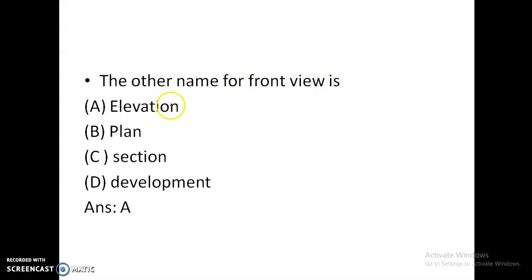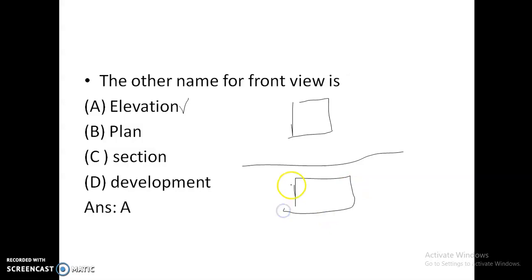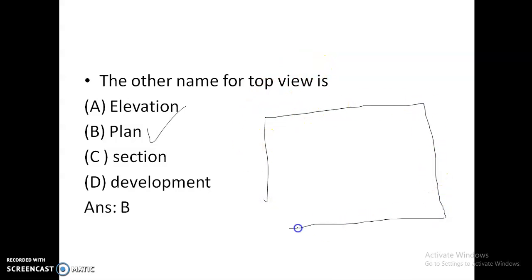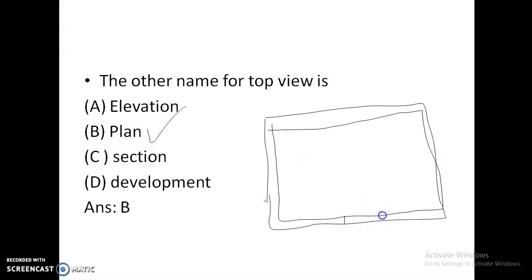The other name for front view is elevation, and the top view is called plan. For example, when viewing the front of a house it is called elevation. When building a new house, we prepare a plan — the top view of the building showing total area, walls, main door, and back door — and submit it to the corporation office for approval. The plan is mostly used in civil engineering.